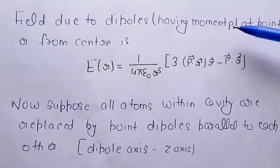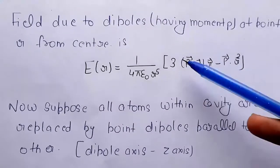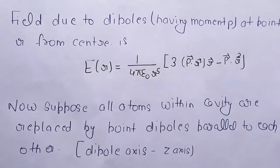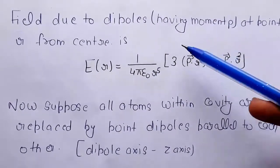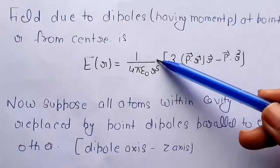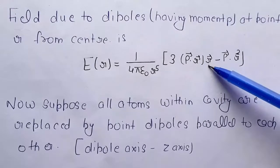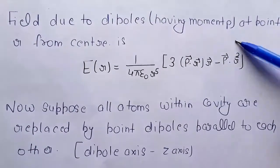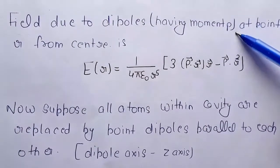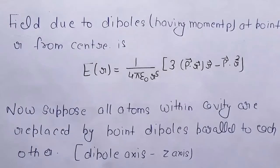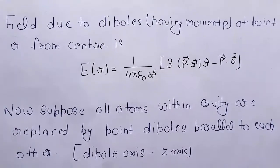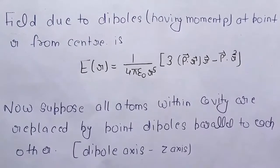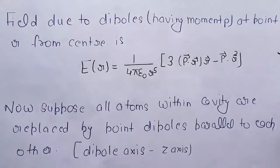Next is the field due to dipoles having moment p at point r from the center. The electric field is 1 upon 4 pi epsilon naught r raised to power 5 into 3p dot r into r vector minus p dot r square. Now this is our electric field value which is because of dipoles. In case you don't know this value, you can tell us if you want. We will upload our next video for this particular derivation.